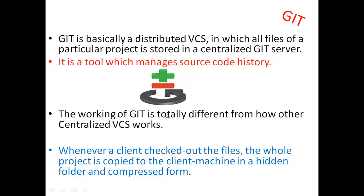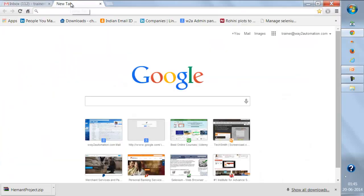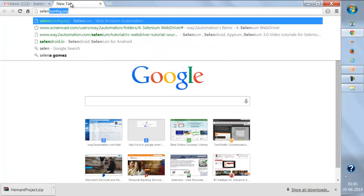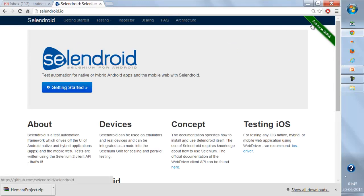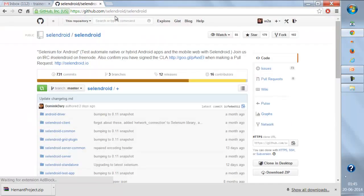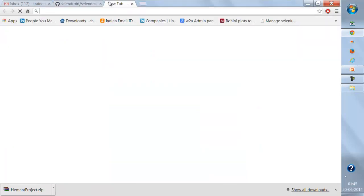Git works completely differently from other centralized version control systems like SVN or VSS. In Git, whenever a client checks out files, the whole project is copied onto the client machine in a hidden folder in compressed form — an entire mirror of the project is stored locally. There are many open source projects using Git; for example, the Selenium and Appium projects maintain all their version control on GitHub, where you can see 'Fork me on Git' on their websites.